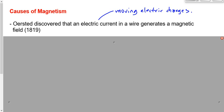This is probably the most important — I wouldn't say the most important scientific discovery — but probably the most important technological discovery. You guys know the difference between technology and science? Technology is the application. This is probably the most important technological discovery in the history of the world, literally — that electric current or moving electric charges generate magnetic fields.